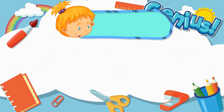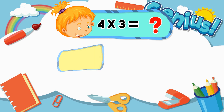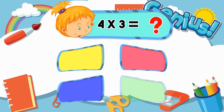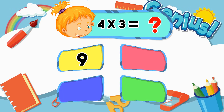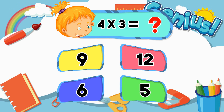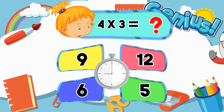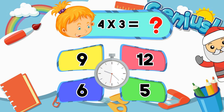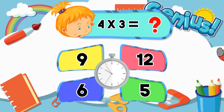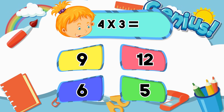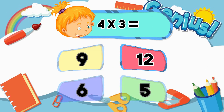What is 4 times 3? 9, 12, 6, 15. The correct answer is 12.